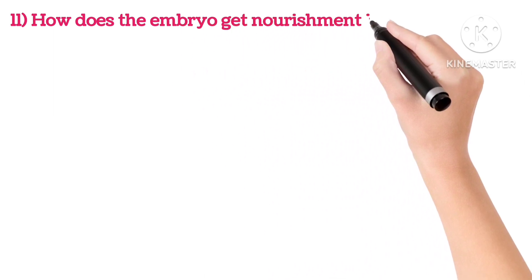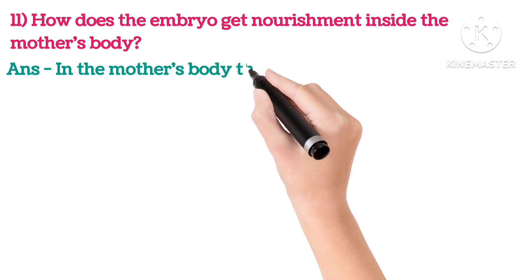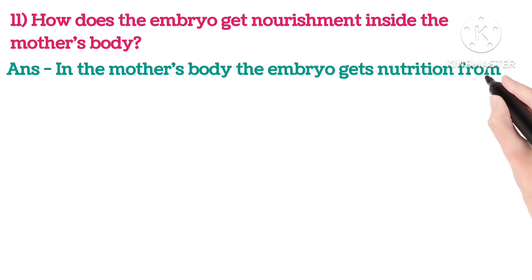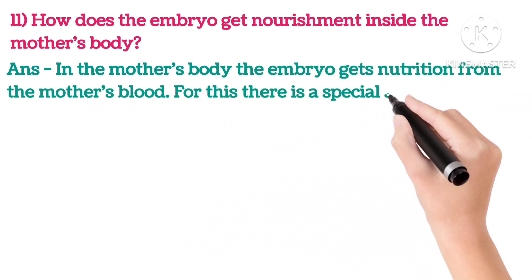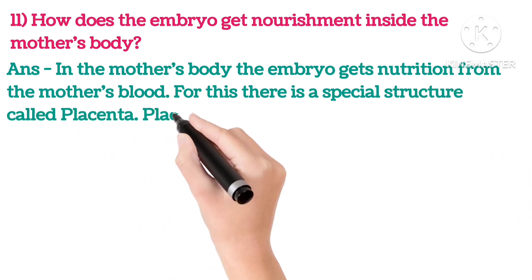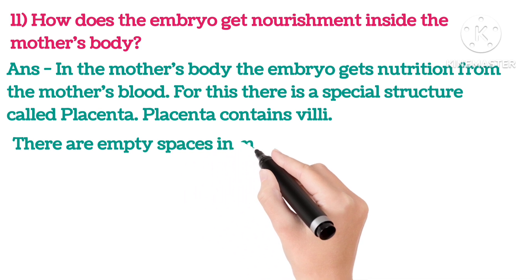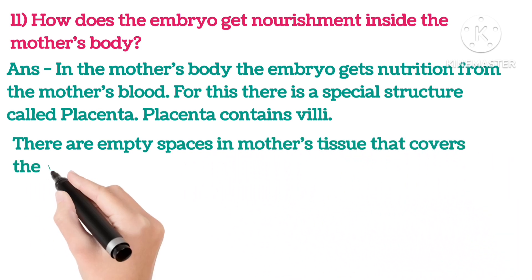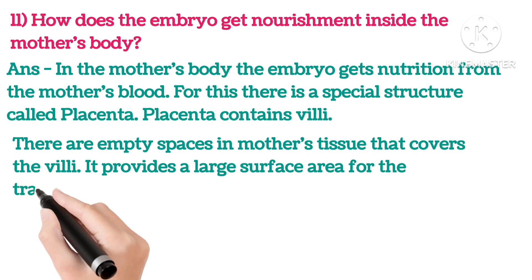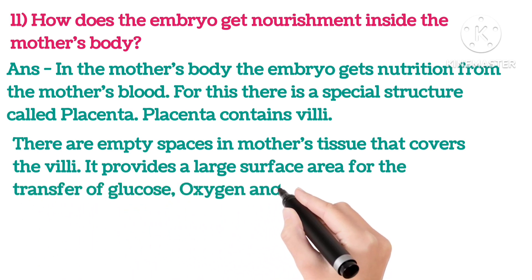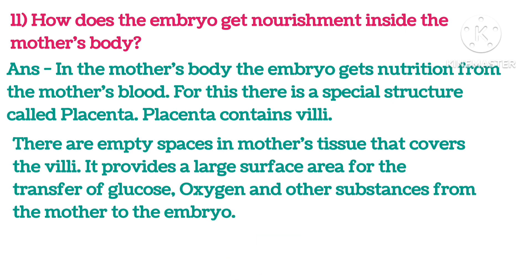Eleventh: How does the embryo get nourishment inside the mother's body? In the mother's body, the embryo gets nutrition from the mother's blood. For this, there is a special structure called the placenta. The placenta contains villi, and there are spaces in the mother's tissue covering the villi. It provides a large surface area for the transfer of glucose, oxygen, and other substances from the mother to the embryo.